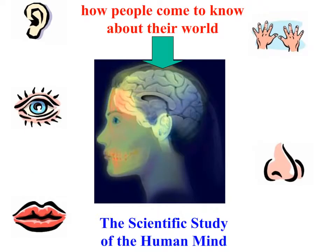As we explore the question of what is cognition throughout this semester, we're essentially asking how it is that people come to know about their world. We know that they have hearing, vision, taste, touch, smell, and also movement senses — but how do they take that information and come to an understanding of the world around them?